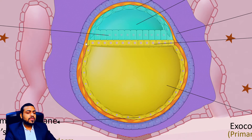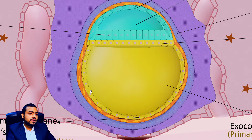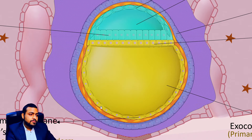Most embryologists believe that these cells are derived from the hypoblast-derived Heuser's membrane. Most people believe that these hypoblast-derived cells proliferate and differentiate into mesenchymal cells, and these mesenchymal cells surround the embryo from all sides.